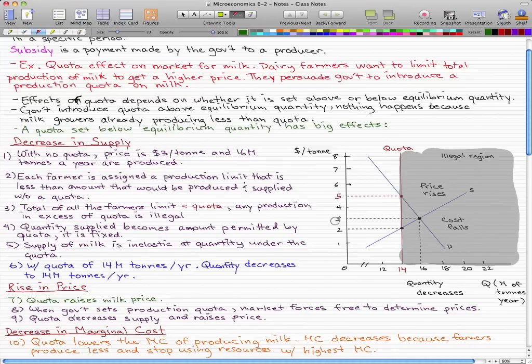So each farmer can only produce a limited amount, and that amount is less than what they usually produce without the quota. The total of all the farmers' limits is equal to the quota. Any production in excess of the quota is illegal. That's what I highlighted gray. The gray area is illegal.